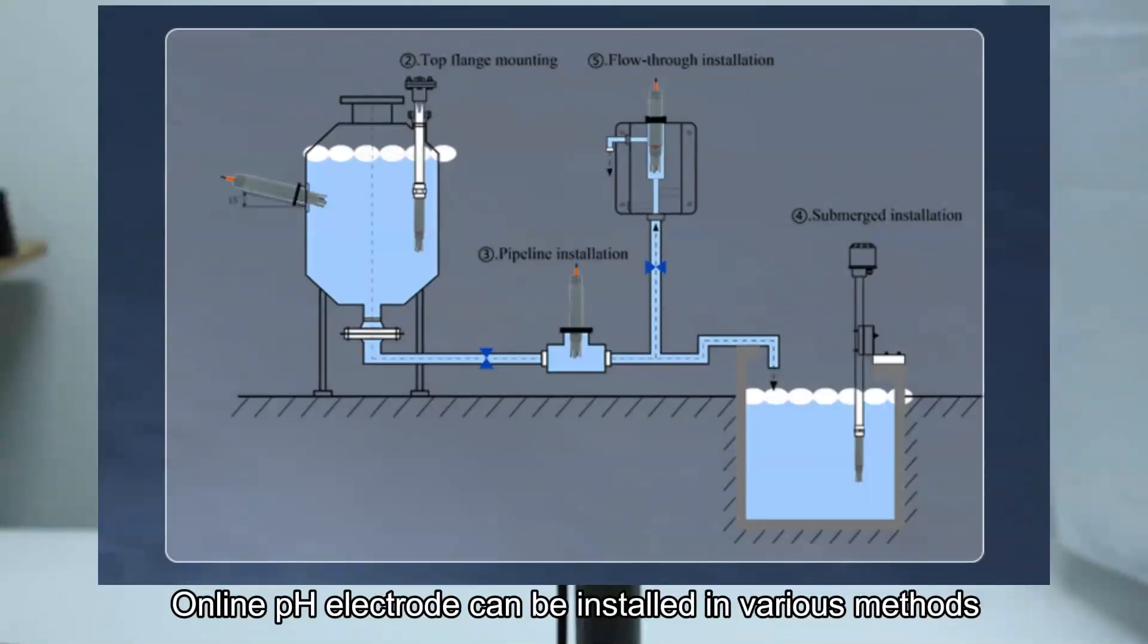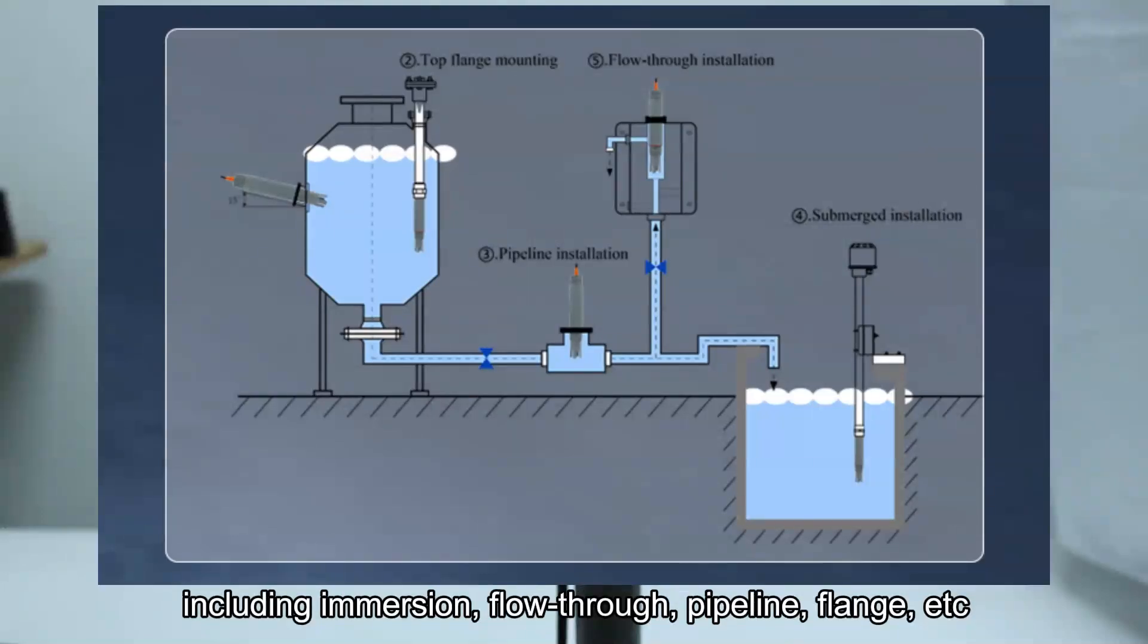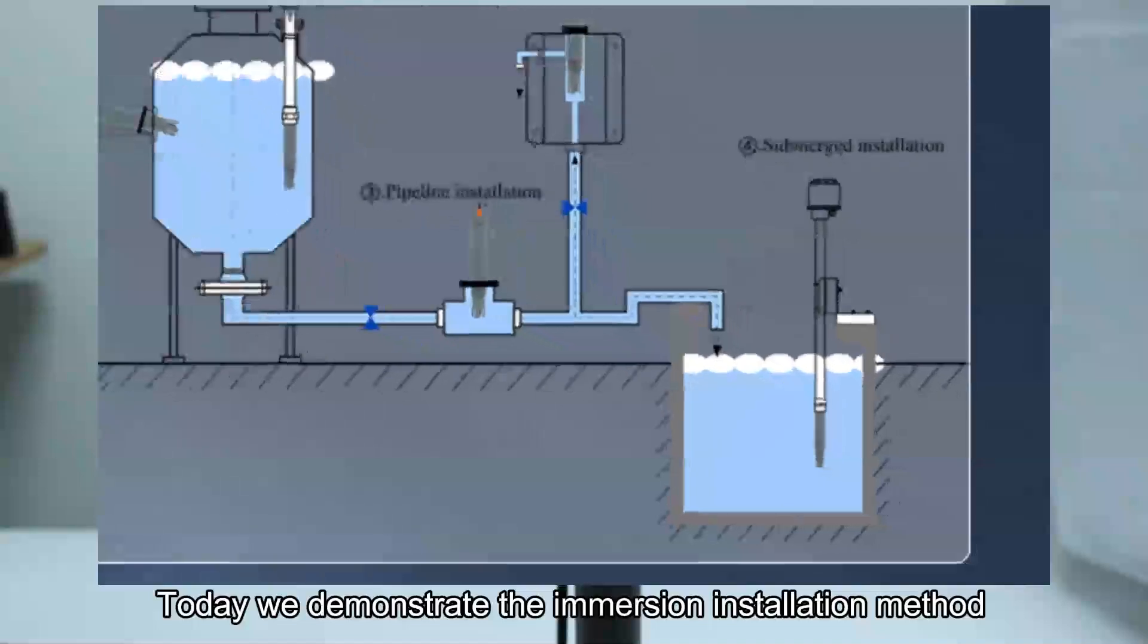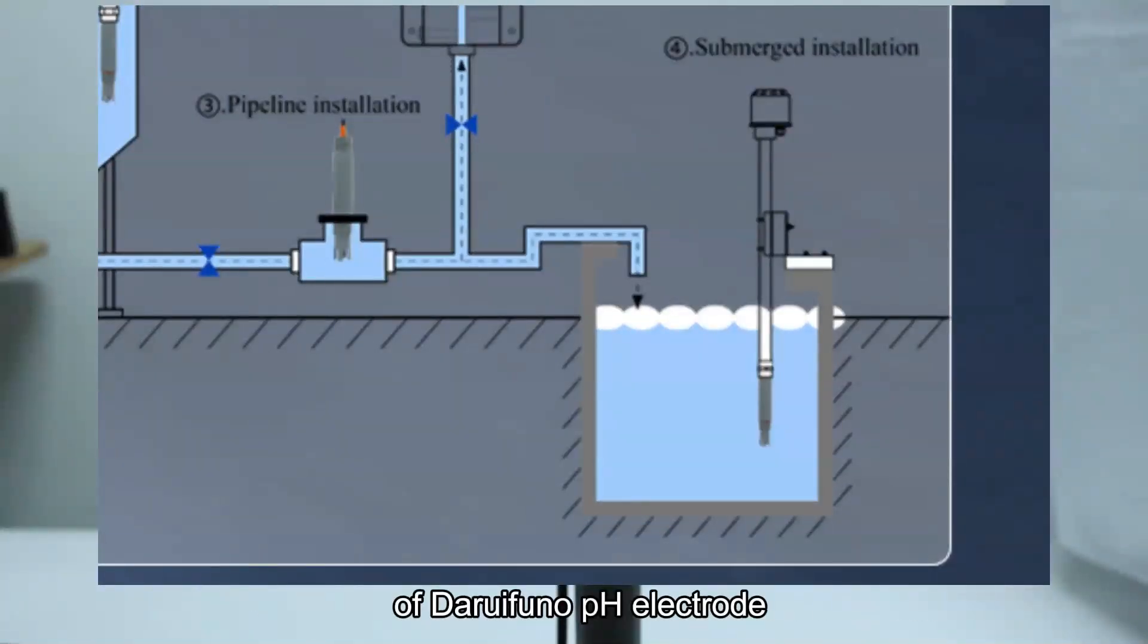Online pH electrode can be installed in various methods, including immersion, flow through, pipeline, flange, etc. Today we demonstrate the immersion installation method of Daruifuno pH electrode.